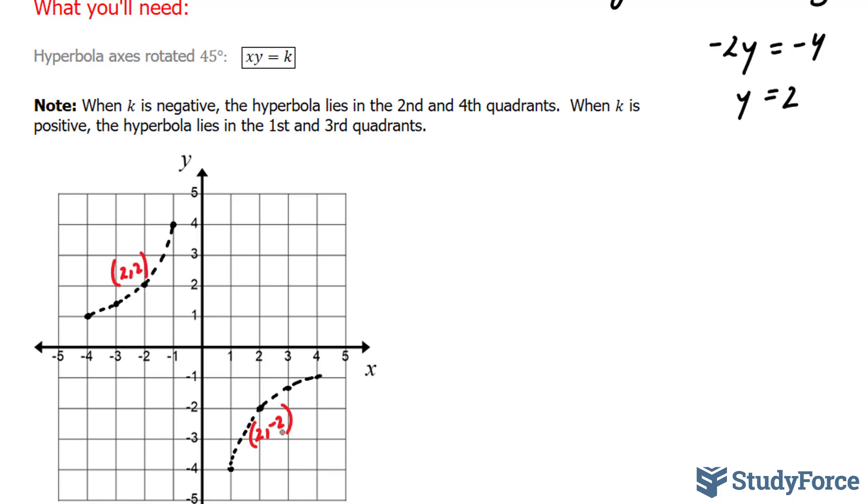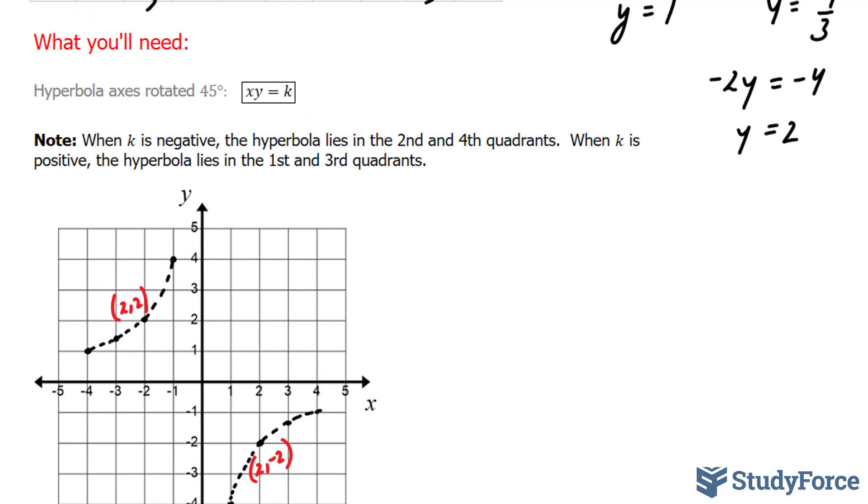From that, we can actually start to find our 2 foci. I know that the foci will lie somewhere in here and somewhere over here. We'll have 2. To find our focus, we need our a and our b. Because remember, the formula for the focus is c squared is equal to a squared plus b squared.